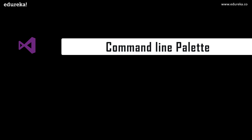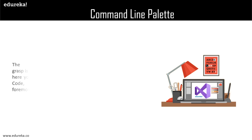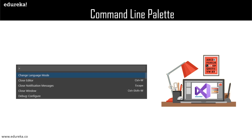Followed by the basic operations, we have the next chapter: command line palette. What exactly is a command line palette? The Microsoft Visual Studio code is equally accessible from the keyboard. The foremost necessary key combination to know is Ctrl+Shift+P, which brings up the command line palette. From here you have access to all the functionalities of Visual Studio. Keyboard shortcuts for common operations include checking language mode, close editor, close notification messages, close window, debug and configuration, and many more.